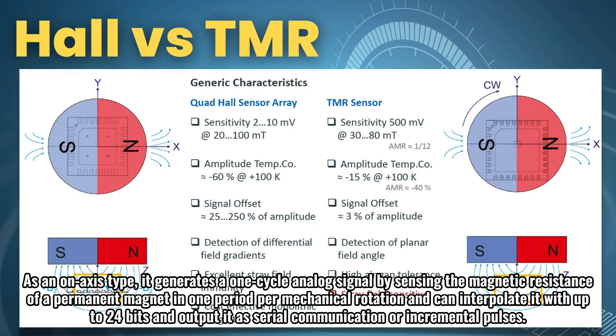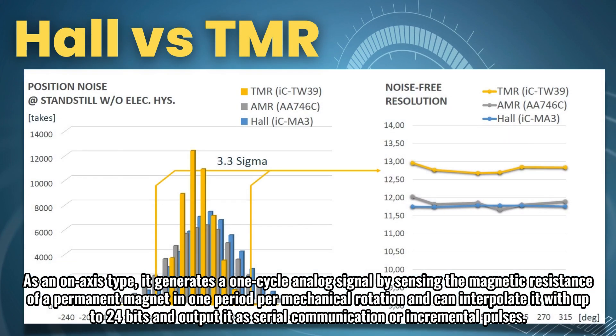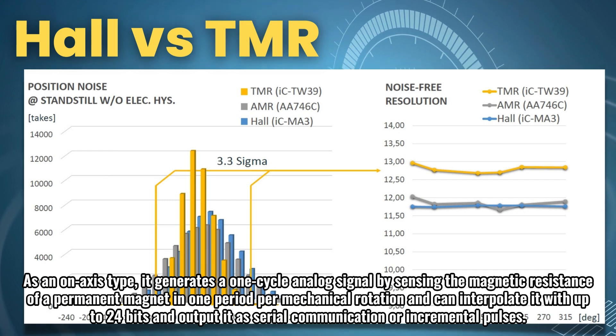As an on-axis type, it generates a one-cycle analog signal by sensing the magnetic resistance of a permanent magnet in one period per mechanical rotation and can interpolate it with up to 24 bits and output it as serial communication or incremental pulses.